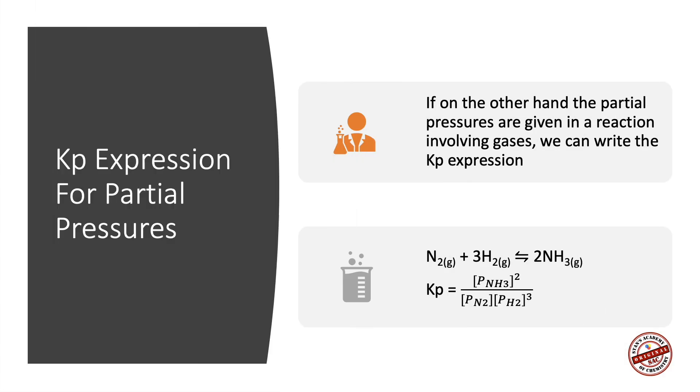On the other hand, if the partial pressures of nitrogen, hydrogen, and ammonia are given, we can determine an equilibrium constant expression called Kp, where we use the partial pressures of the products and the reactants. Kp for the reaction is equal to partial pressure of ammonia raised to 2 divided by partial pressure of nitrogen raised to 1 divided by partial pressure of hydrogen raised to 3. If you have the numerical values for these partial pressures, you can calculate Kp.